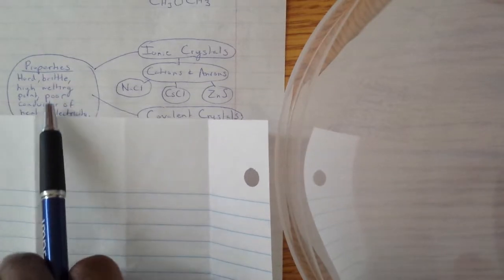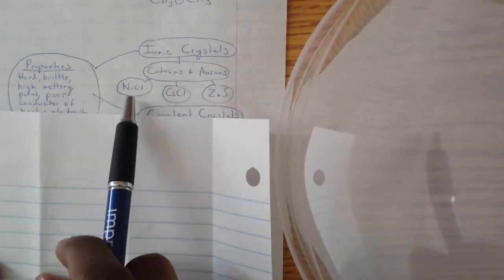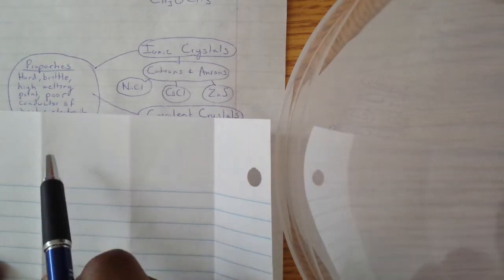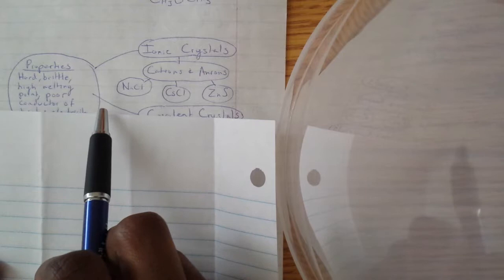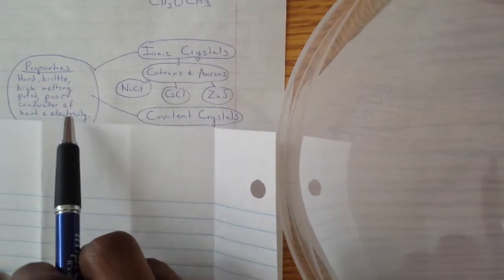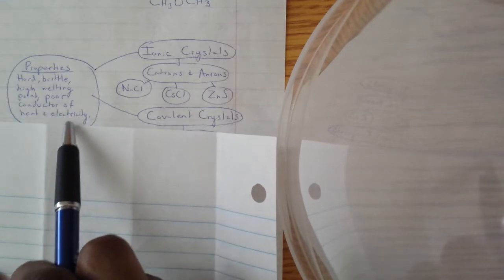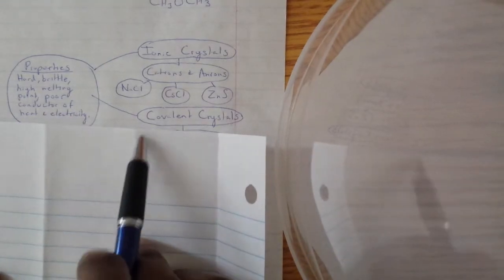High melting point means it's going to resist change. Since those bonds are so strong, it's going to take a lot of energy to break those bonds. And since the electrons are pretty fixed, it's not going to conduct electricity or heat really well.